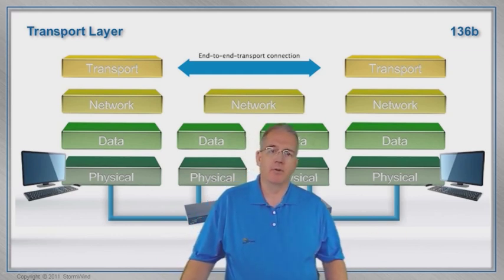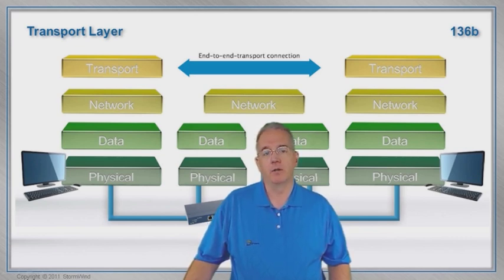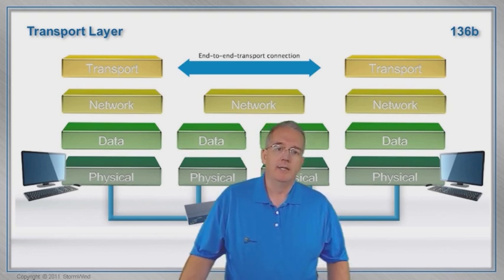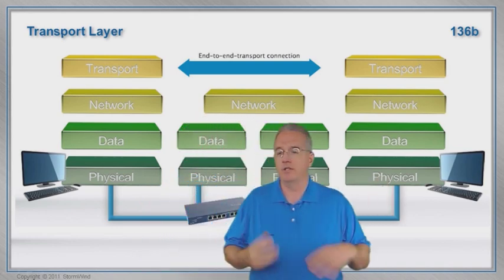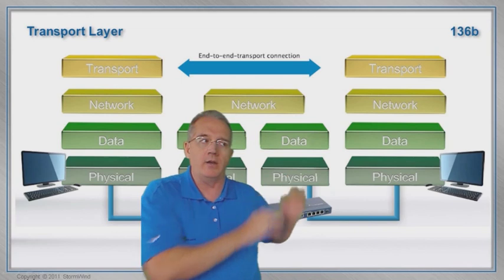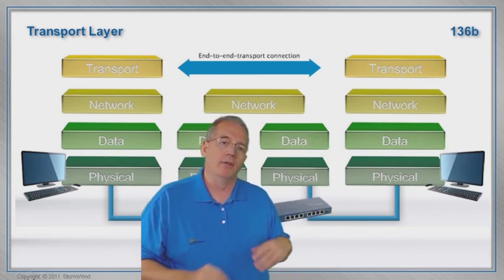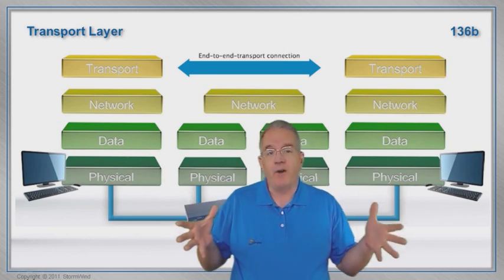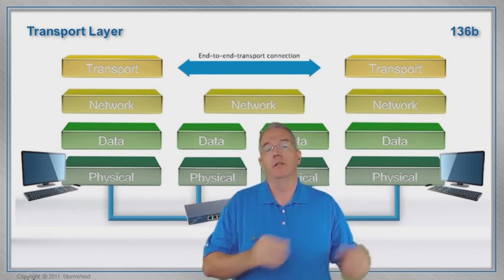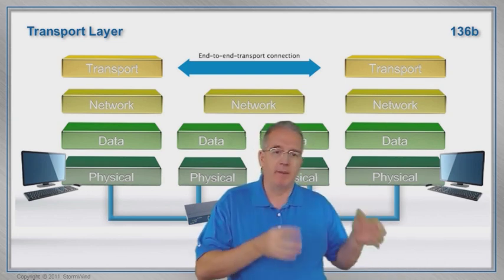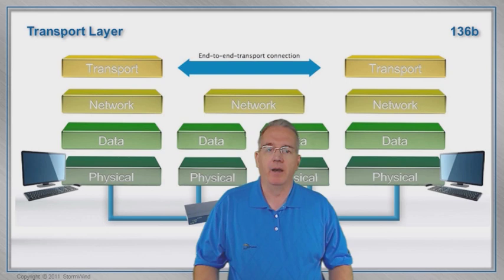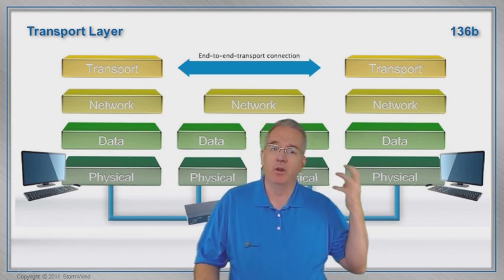If you're using connectionless protocol, the two protocols that we have here are going to be TCP and UDP, transmission control protocol and user datagram protocol. TCP sends everything registered mail. It'll go through and number everything and send it out and the other side has to acknowledge it. If I don't receive the acknowledgements, I'll go ahead and retransmit it and we deal with that back and forth.